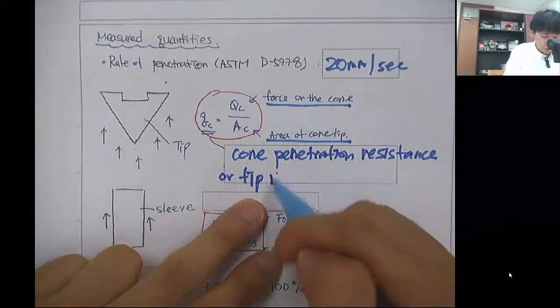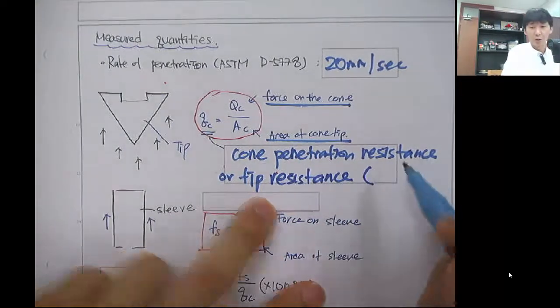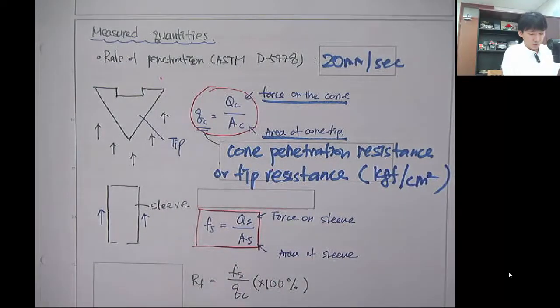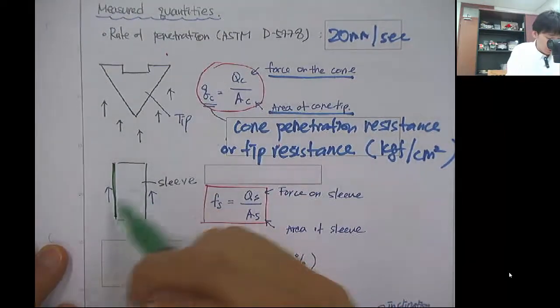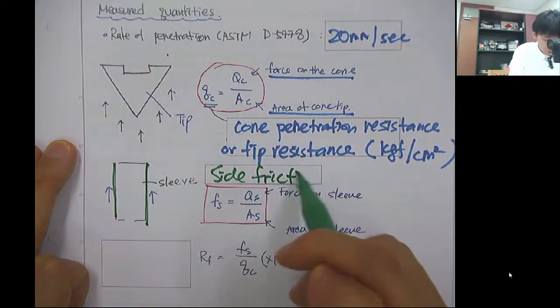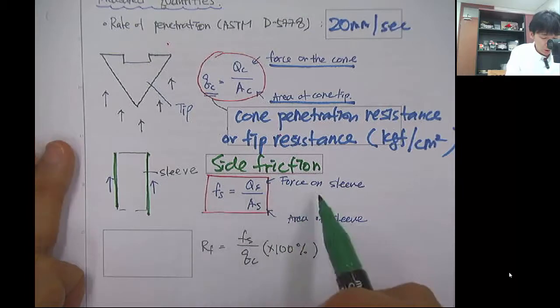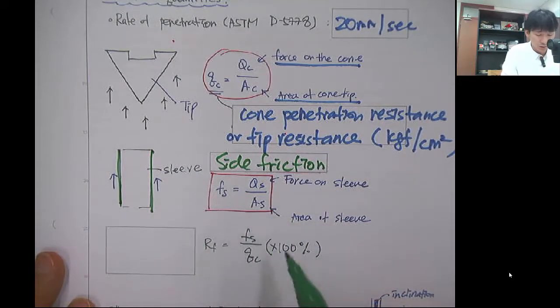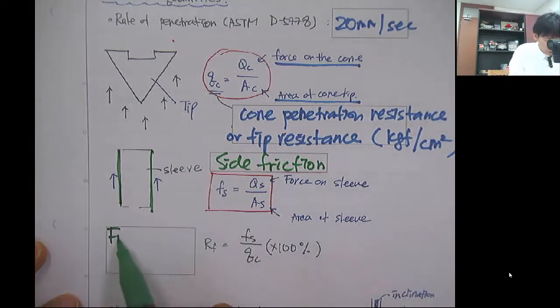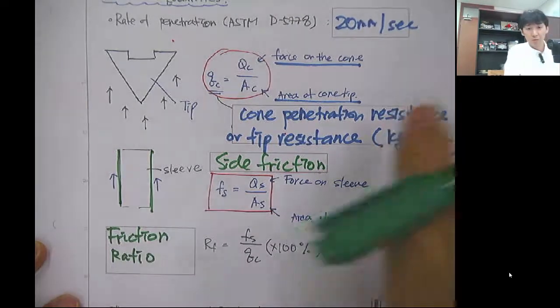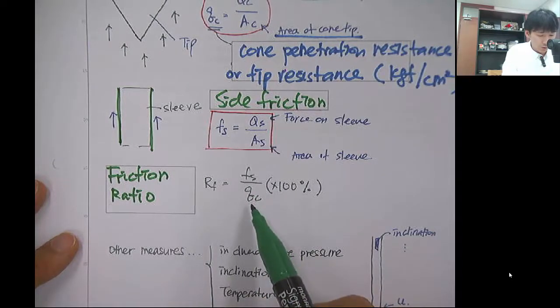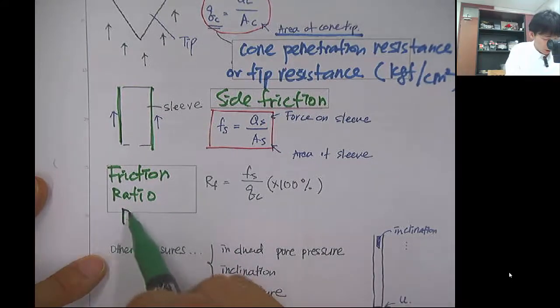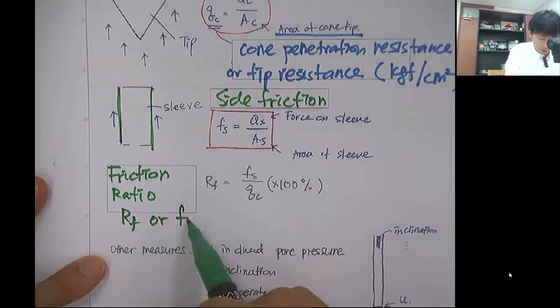It's often referred to as tip resistance. The unit is kilogram force per square centimeter. For the side friction along the sleeve, you can measure the force acting on the sleeve by friction. If you divide by the sleeve area, you get the side friction, kilogram per square centimeter. There's a parameter called the friction ratio, which is the ratio between this friction, side friction, over the tip resistance, often expressed as a percent by multiplying 100. RF or FR is used as the symbol.